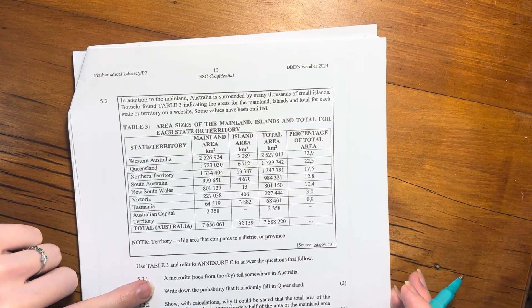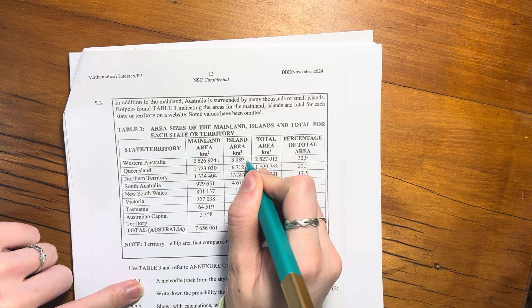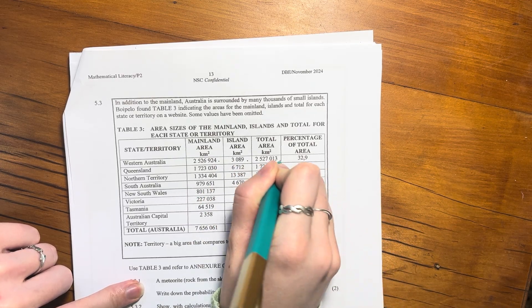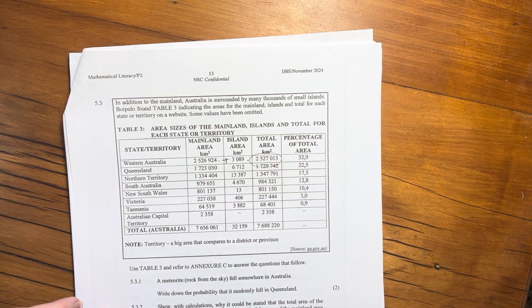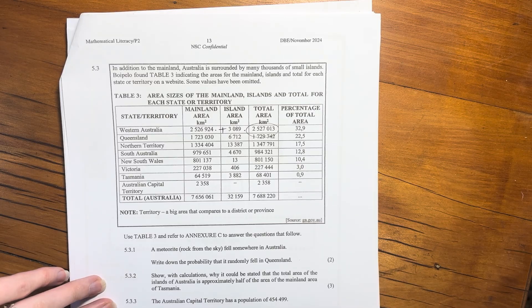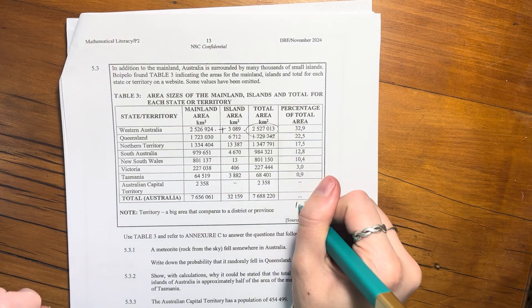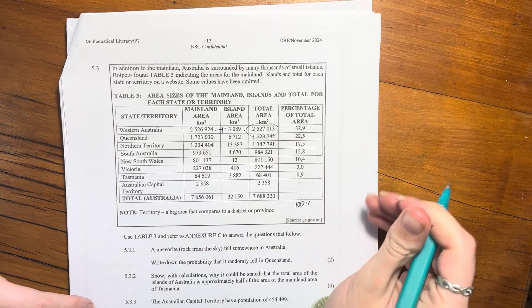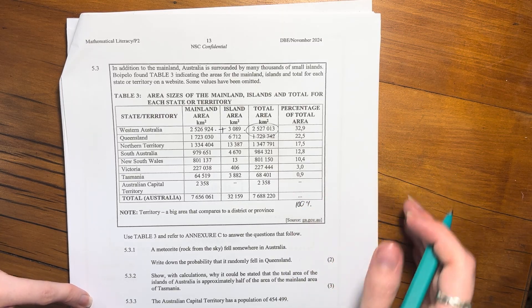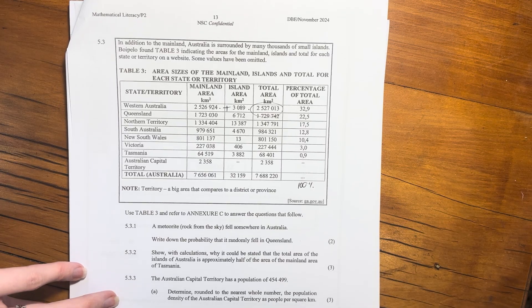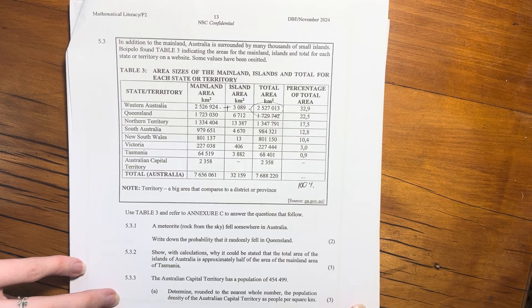So Western Australia, that's the mainland, that is the island area, and that's the total. So this here would just be those two added together. This is all the different territories. And then here's the percentage of total. So these should add up to 100%, right? Because you can't have more than 100% of something.